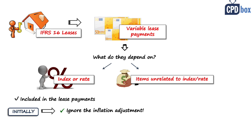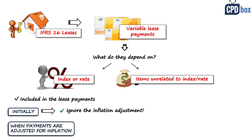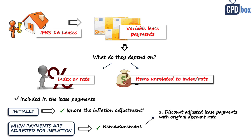When the lease payments really change as a result of inflation, you account for the remeasurement of the lease. You simply recalculate the new lease liability by discounting the adjusted lease payments using the original discount rate, and account for the difference as an adjustment to the right-of-use asset. The good news is that you don't need to make unnecessary guesswork about how the future will look at the commencement of the lease.